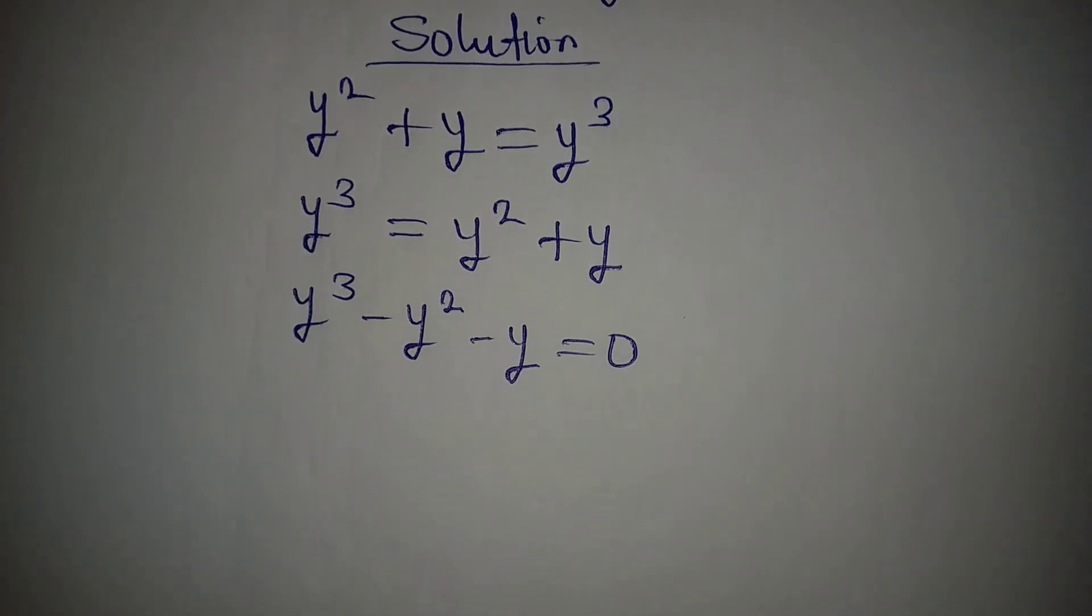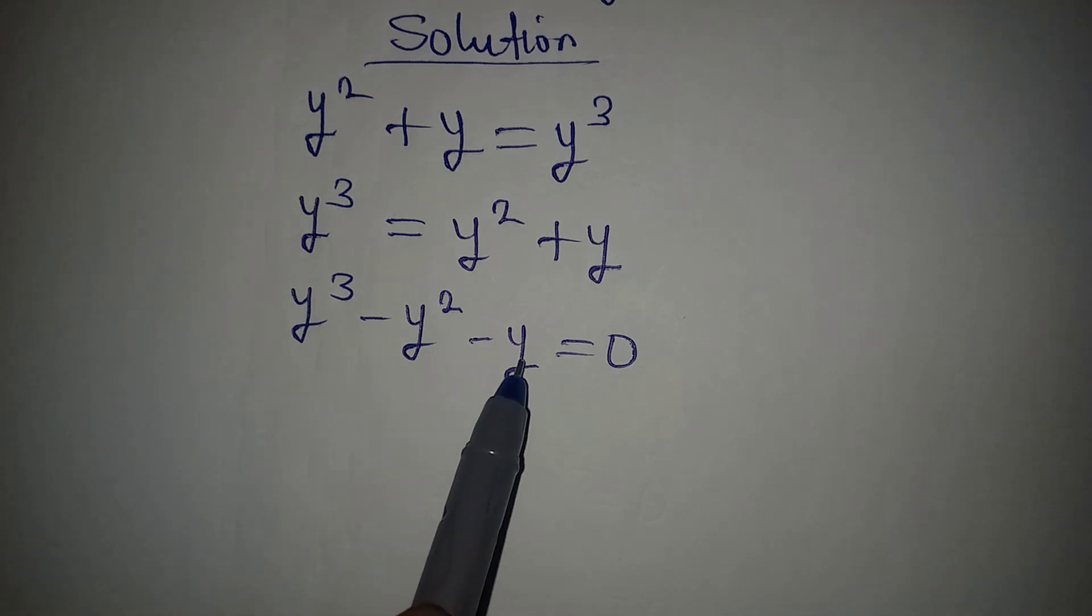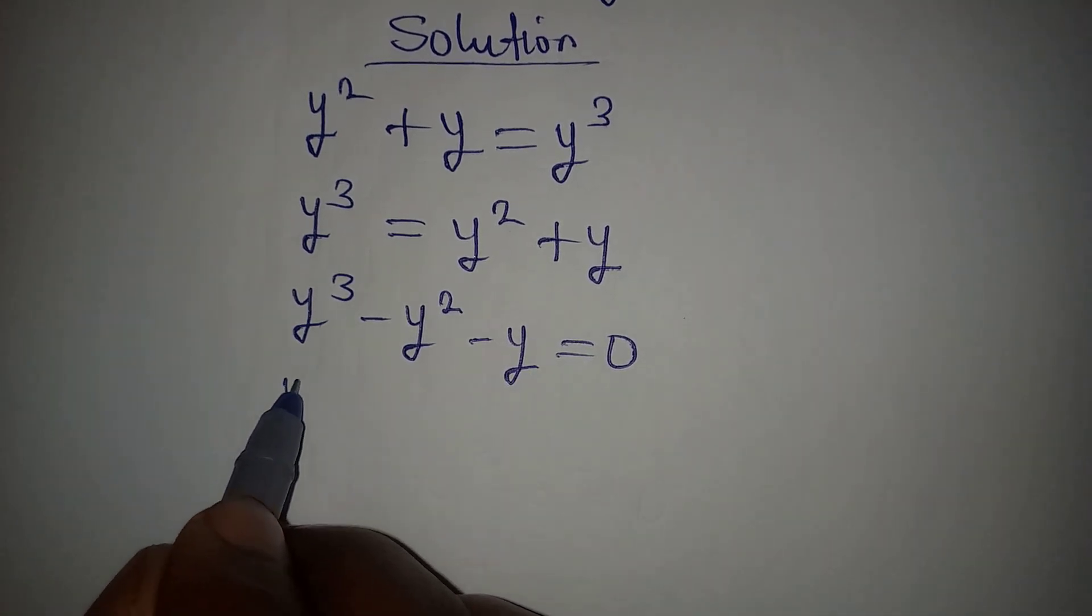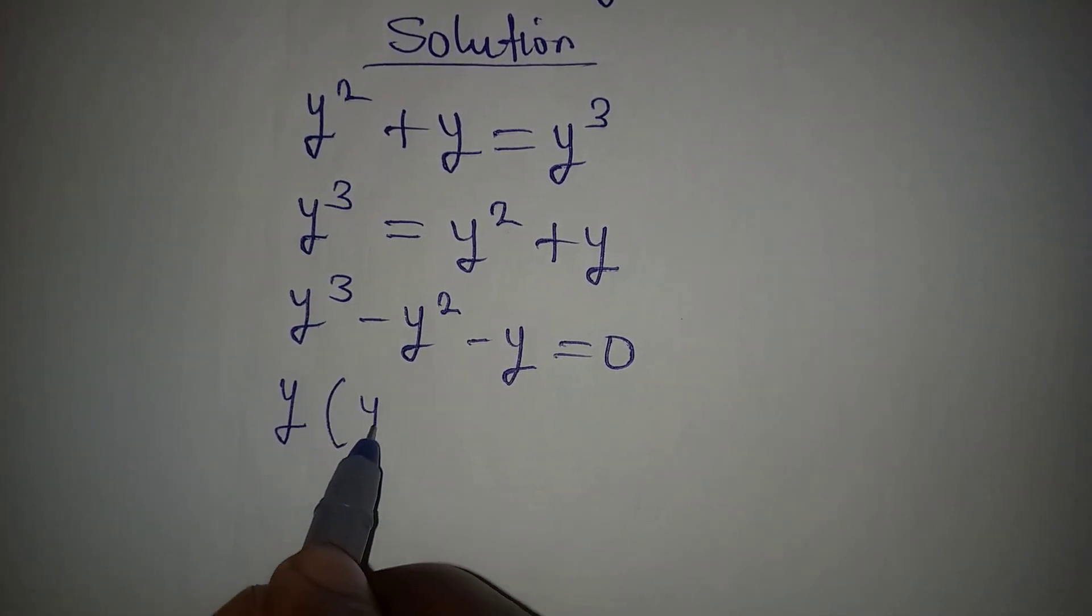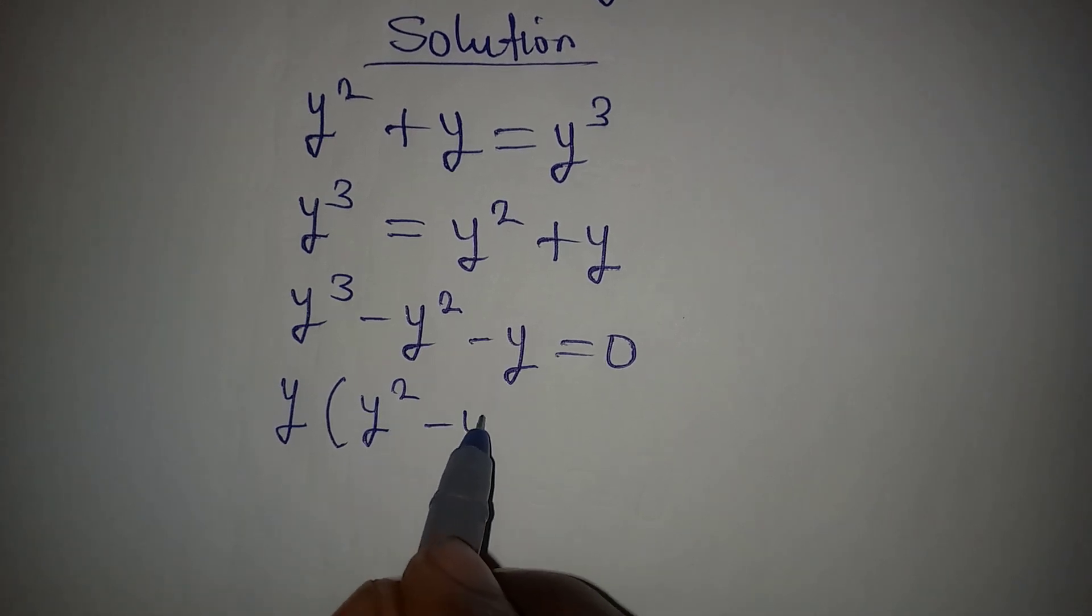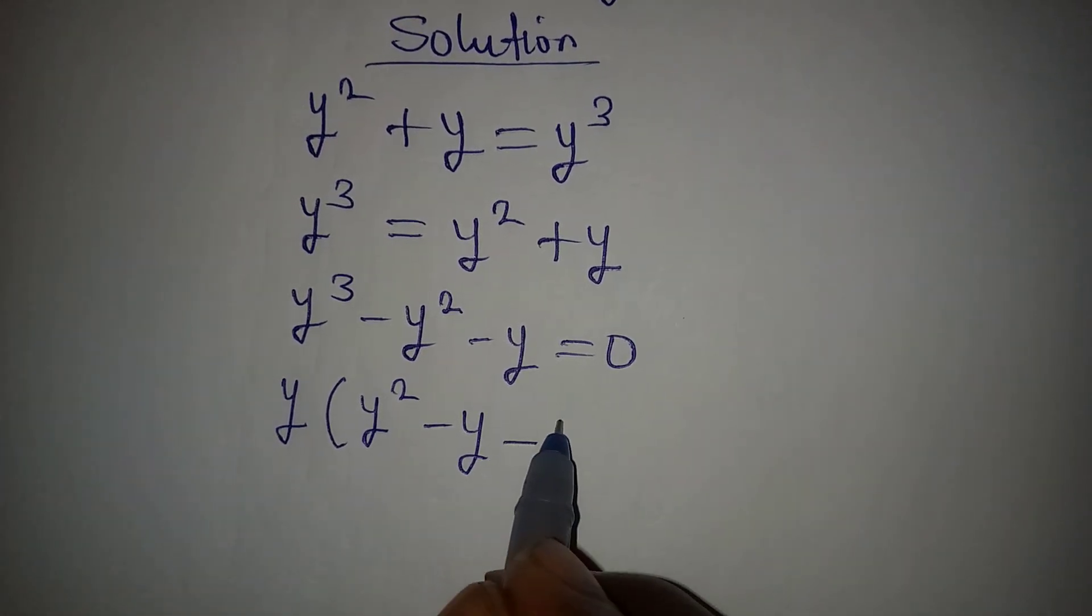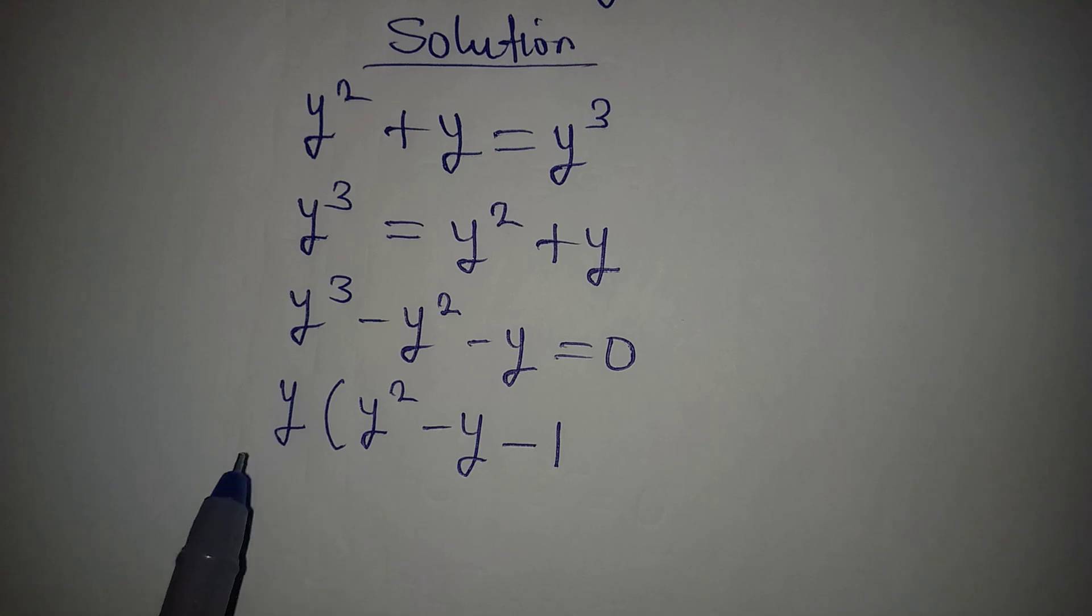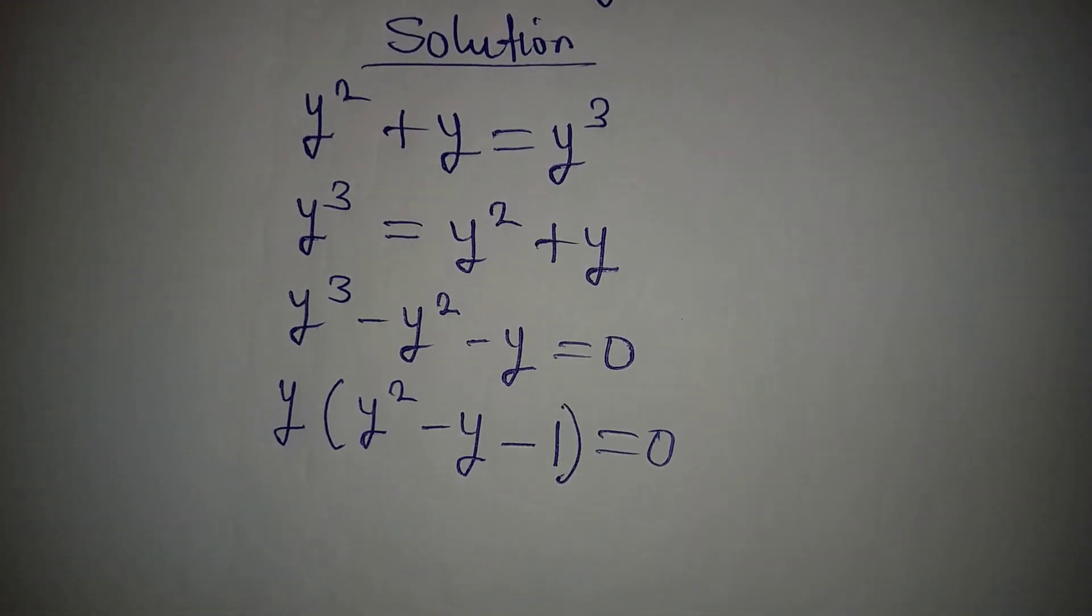What do you observe from here? y is common to these three terms, so factor out y. Then we have y times y squared minus y minus 1, and we close this and equate it to 0.